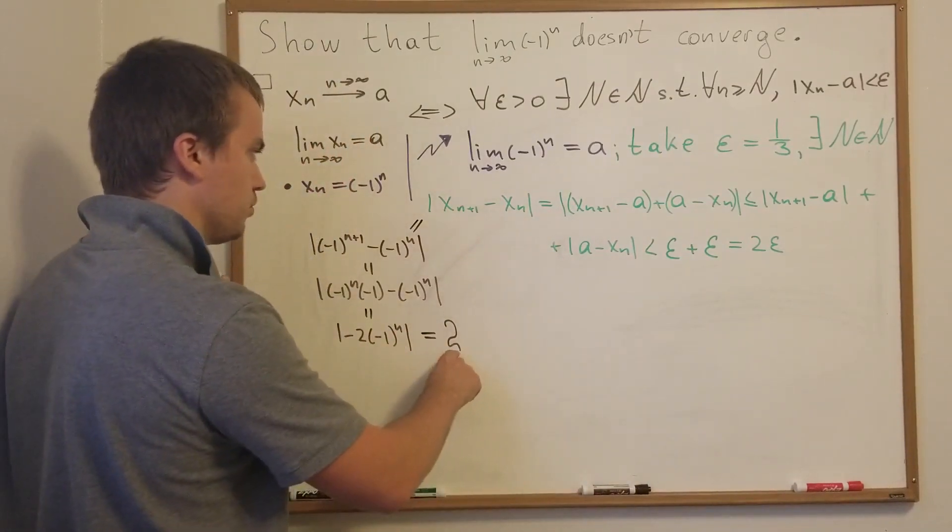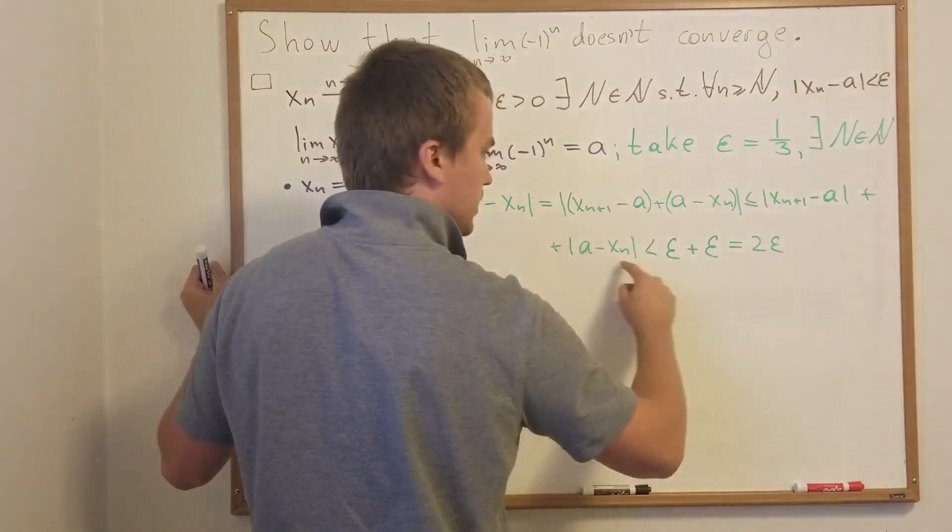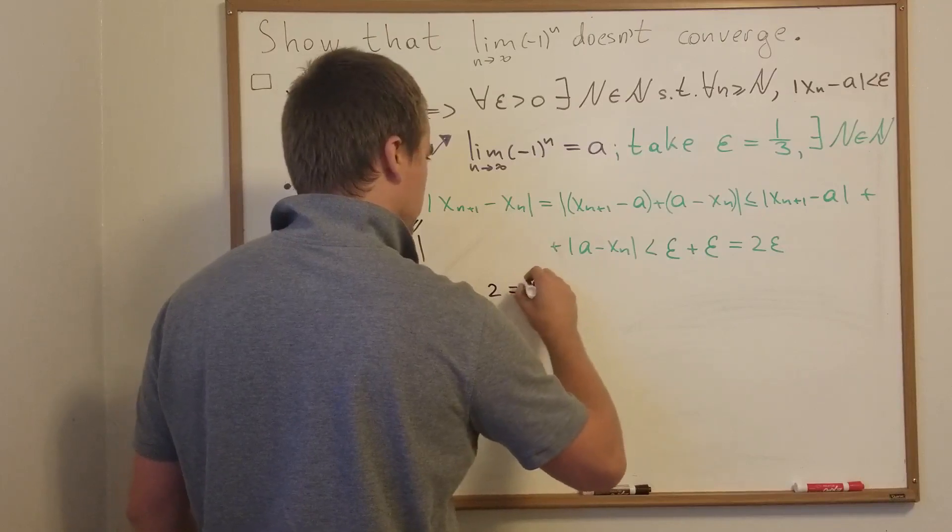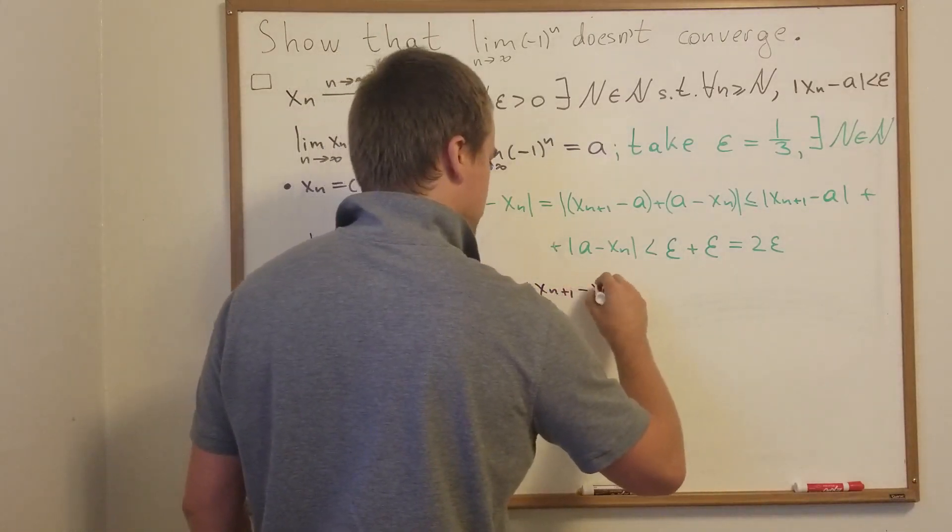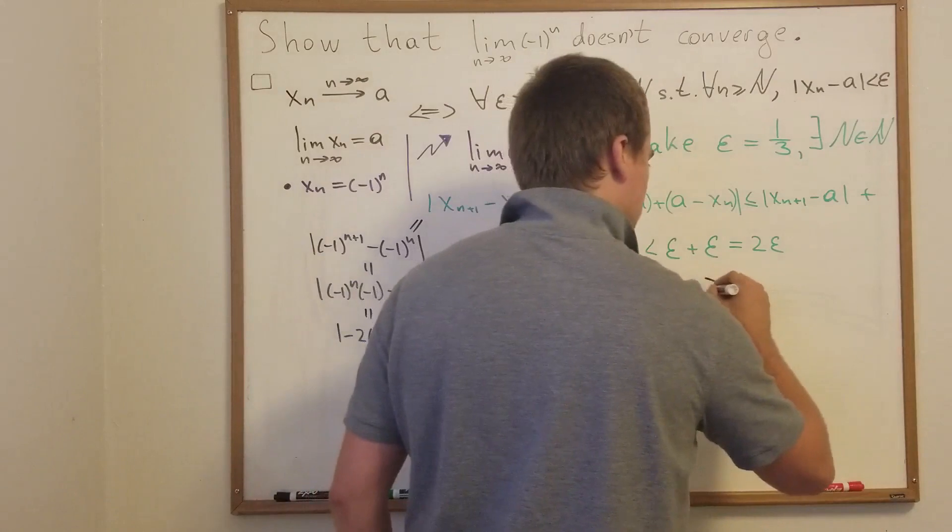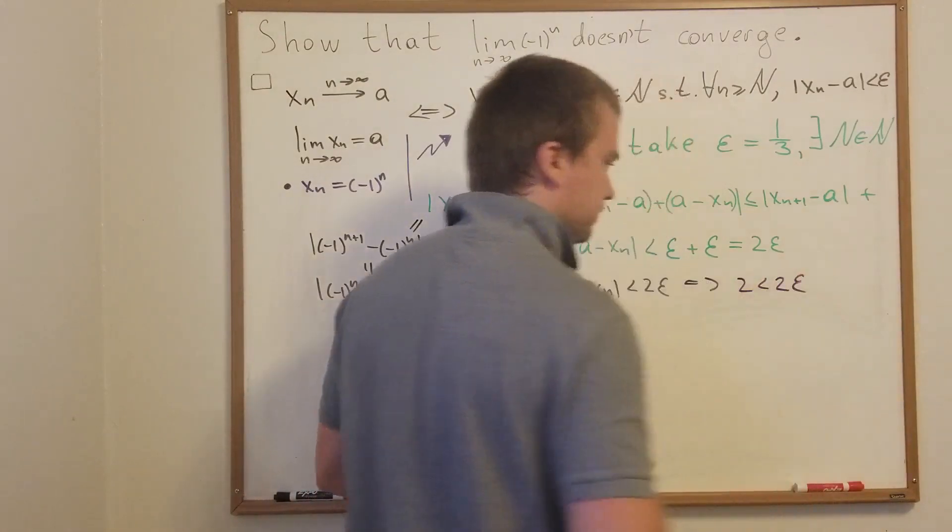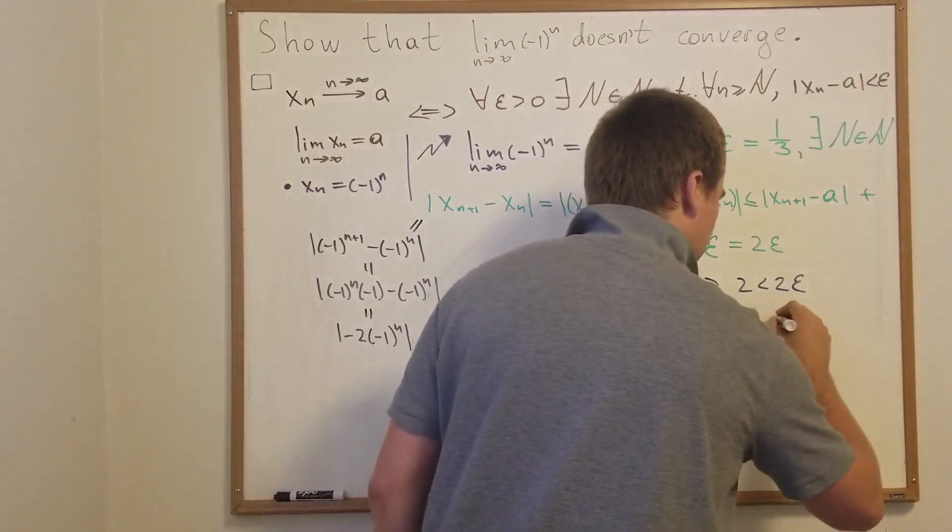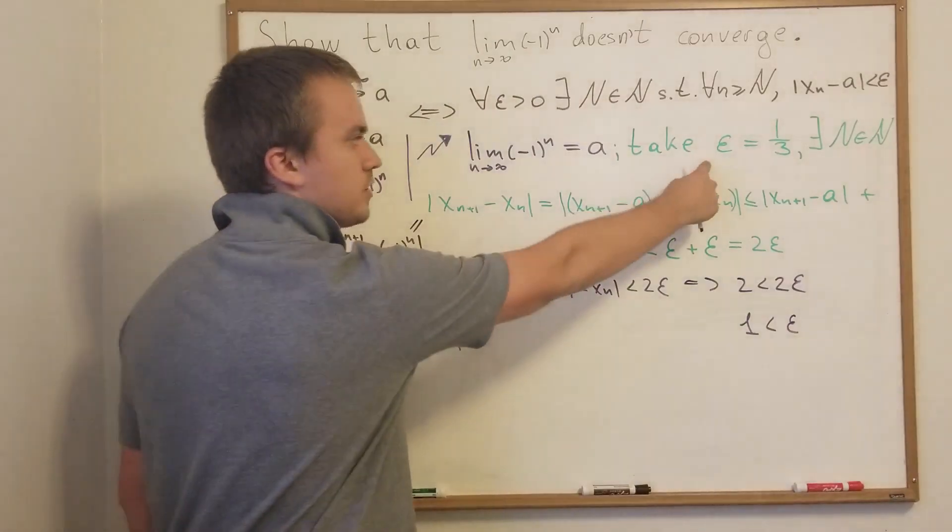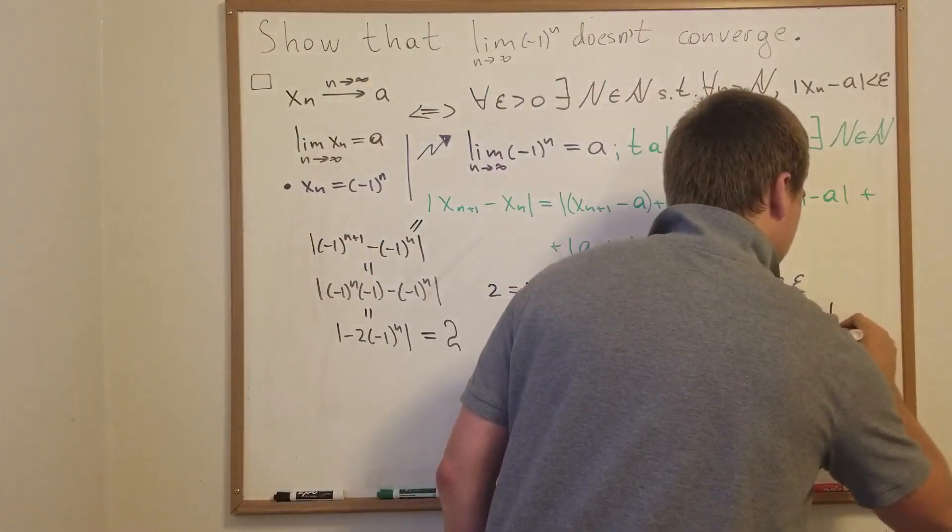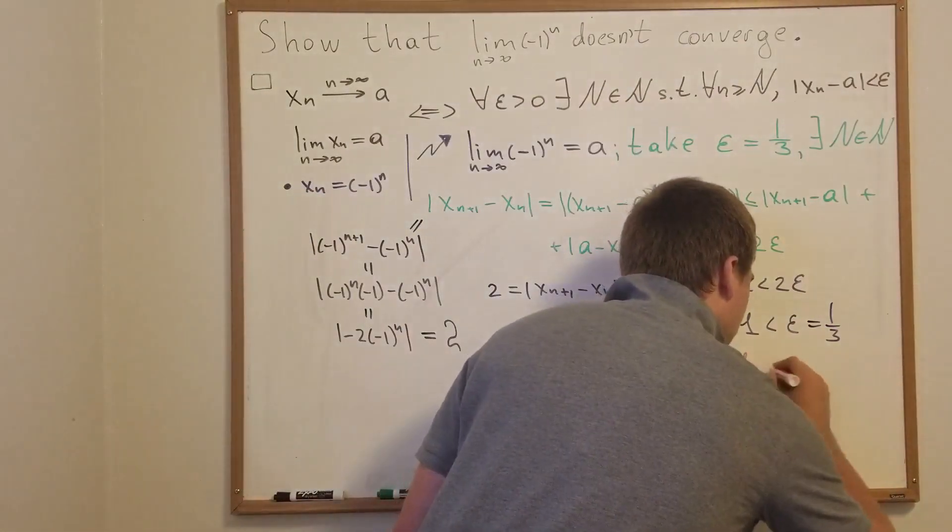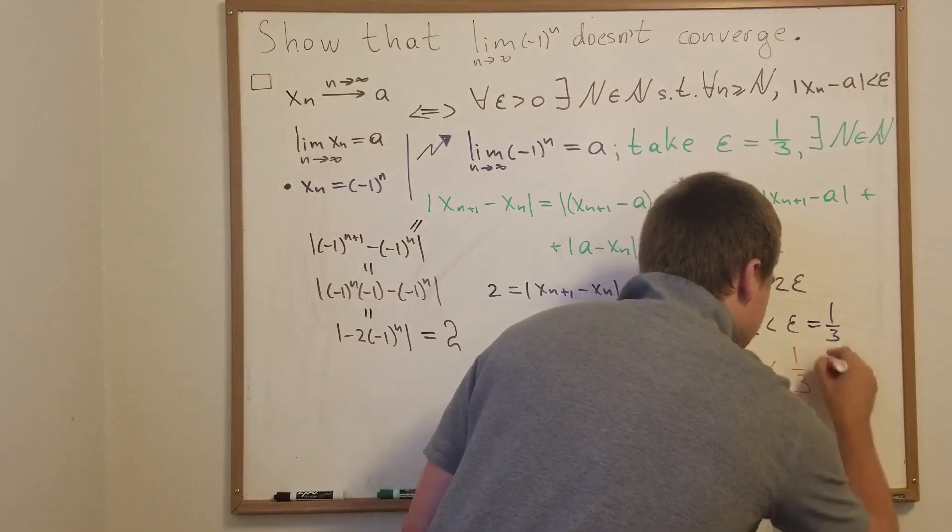Let's connect all pieces in our puzzle. So we have two, and following this inequality, it's strictly less than two epsilon. Why? Because we have that two equals xn plus one minus xn, which is strictly less than two epsilon. From here we get two is less than two epsilon. Dividing by two, we get one less than epsilon. But what is our epsilon? We took epsilon equal to one third. And here's our desired contradiction: we got that one is strictly less than one third, and this is definitely a contradiction.